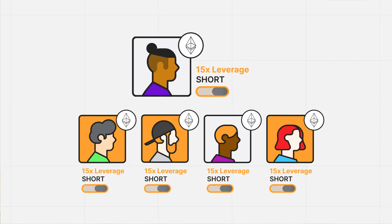If the position closes with profit, Satoshi will earn a prearranged percentage of their followers' gain, up to 15%. This incentivizes master traders to maximize their position's profit for themselves and their followers.